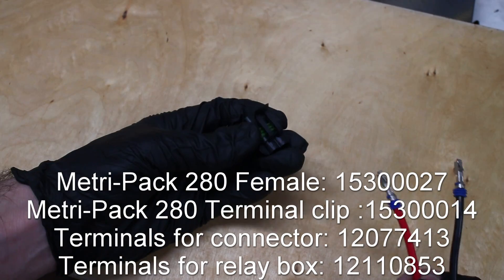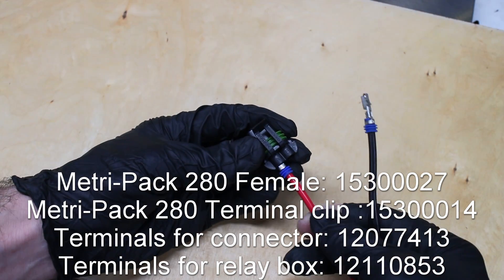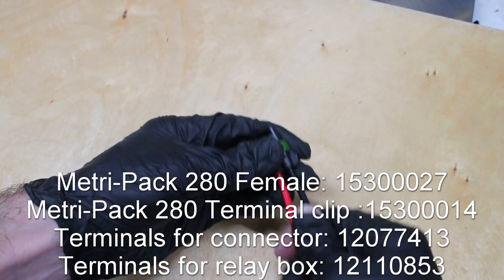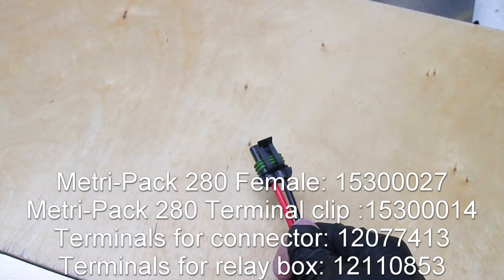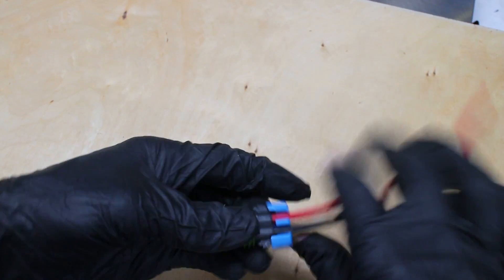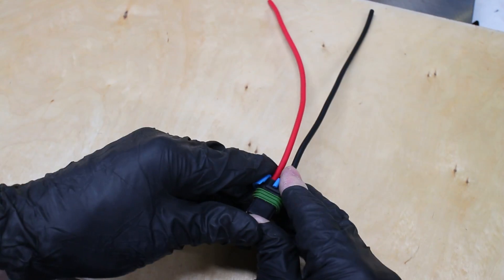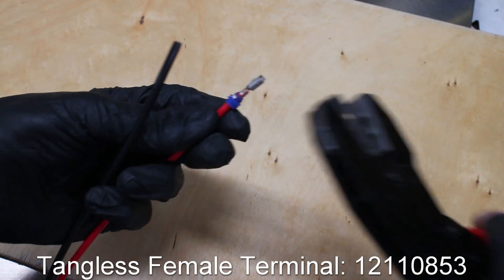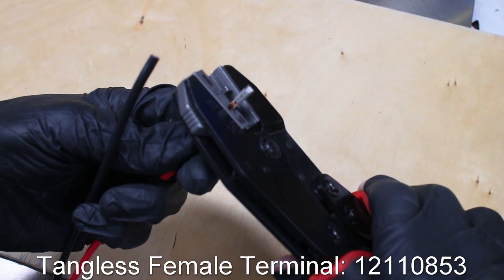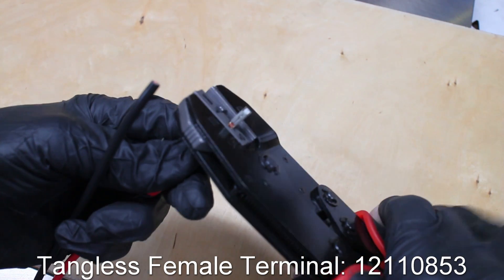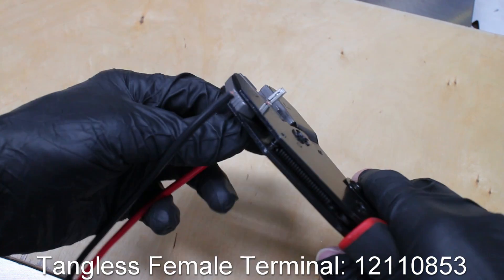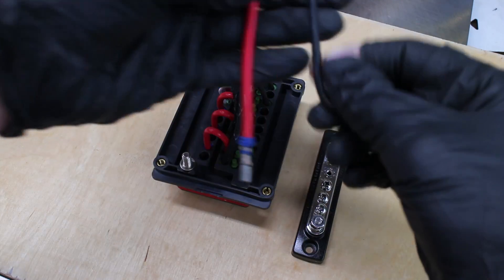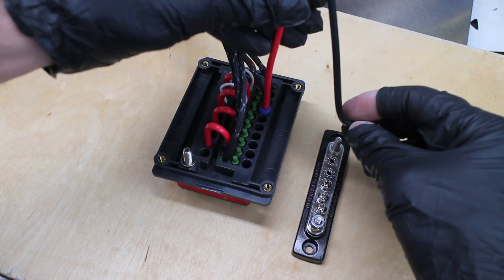These terminals then lock into these MetriPak 280 plugs, followed by the blue wire clip. The other end of the red power wire gets a tangless terminal that goes into the relay box. So the positive wire gets power from the relays and the negative ground wire is grounded via this bus bar.